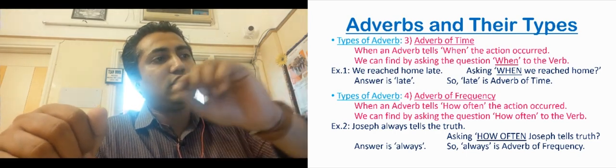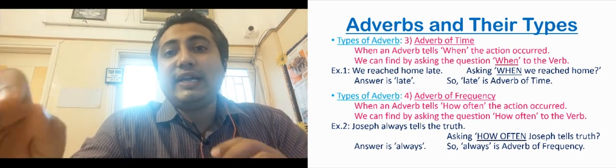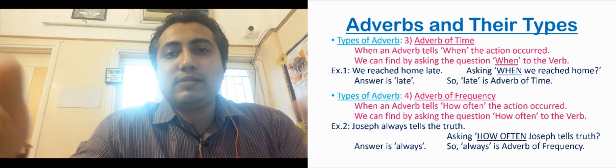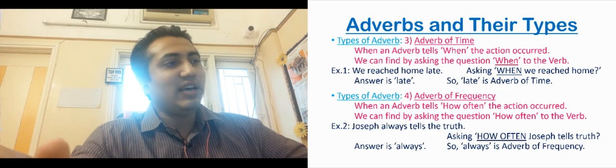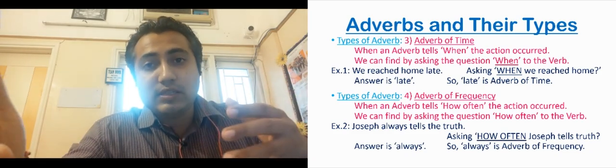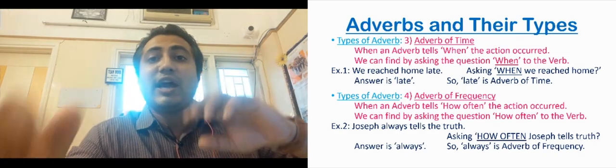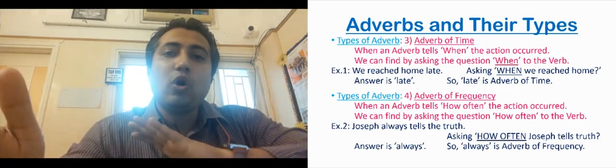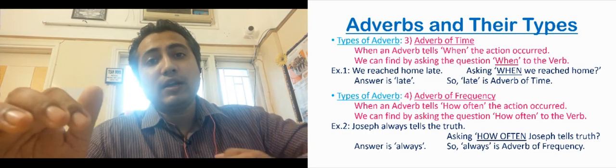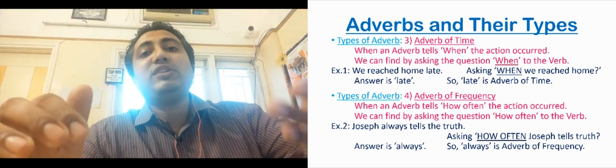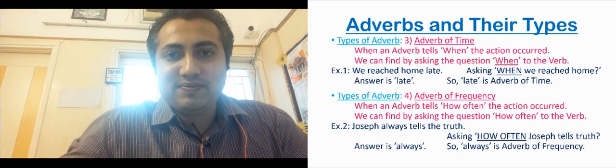Example: Joseph always tells the truth. What is the action? Tells. When does he tell — how often? Always. So here Joseph tells — how often is the action done? Always. So always is adverb of frequency. How often an action is done, at what interval it is done — the answer for that is adverb of frequency.